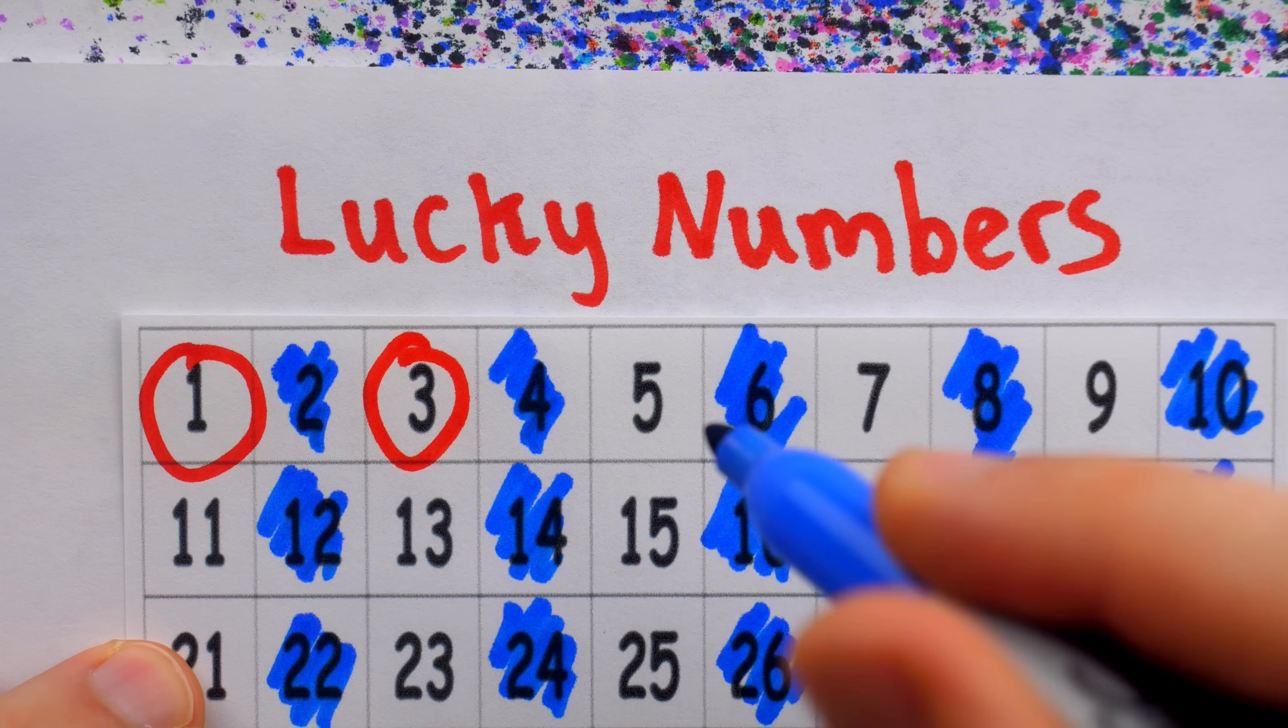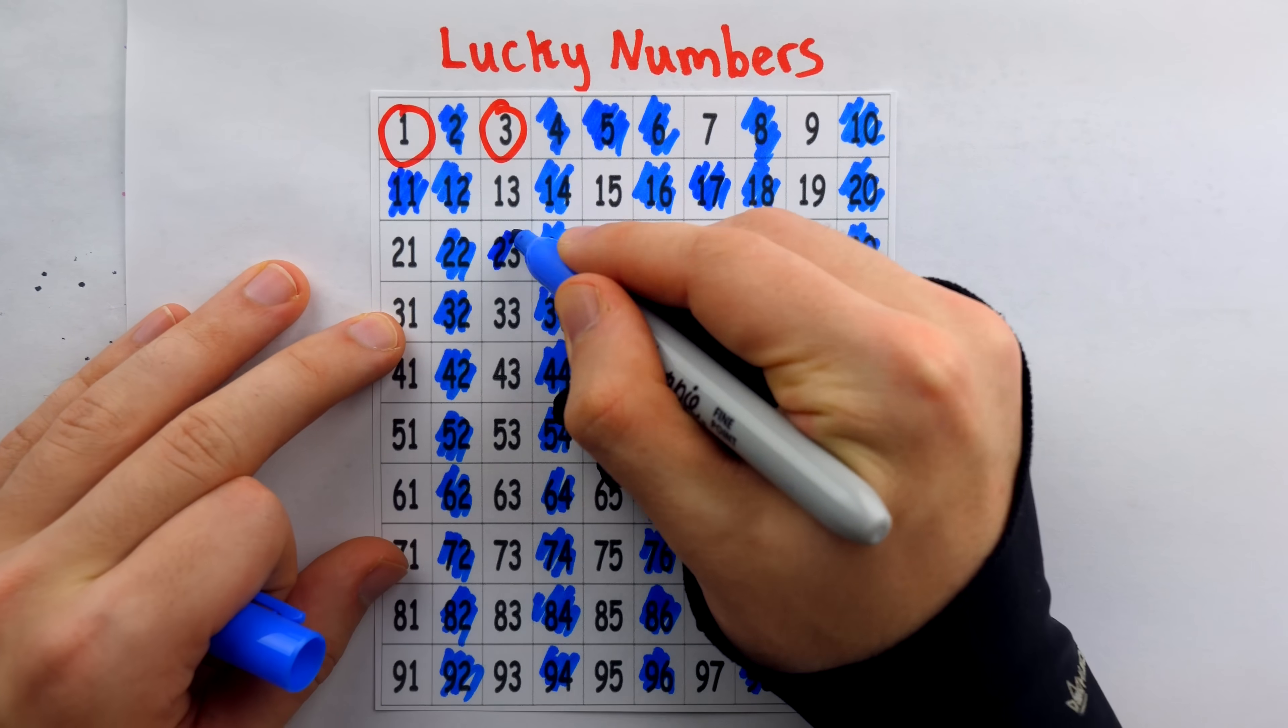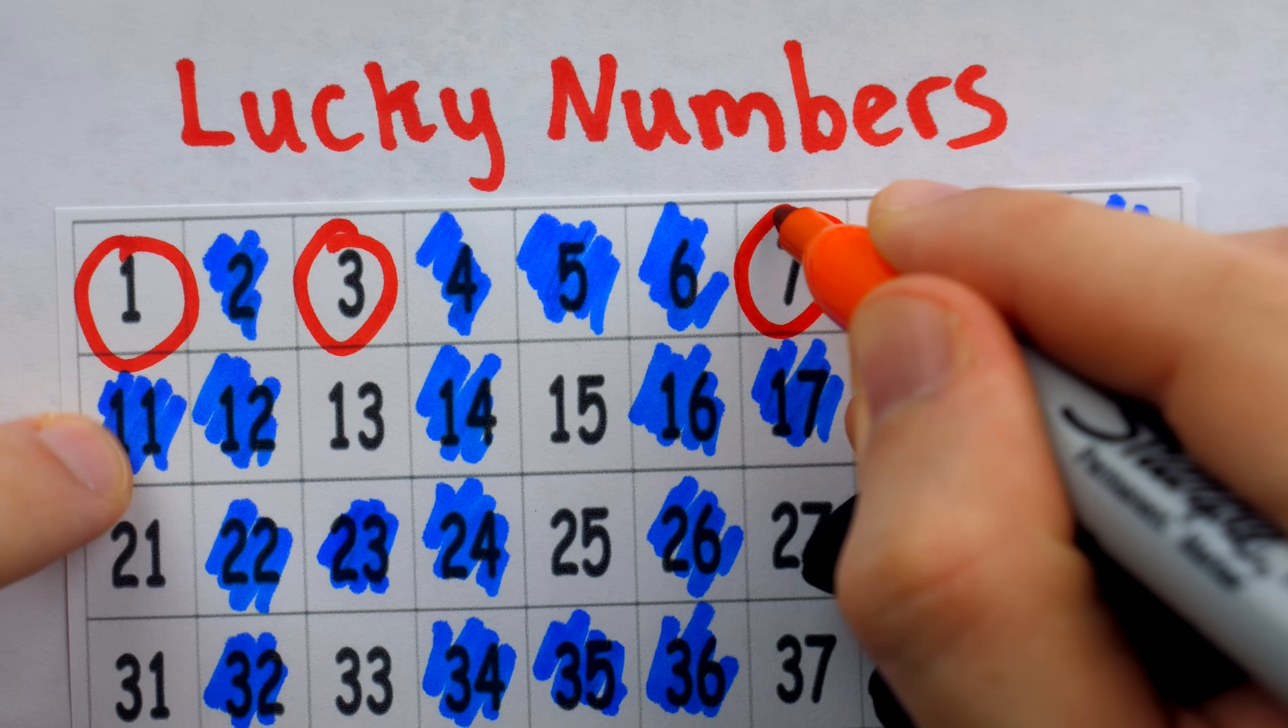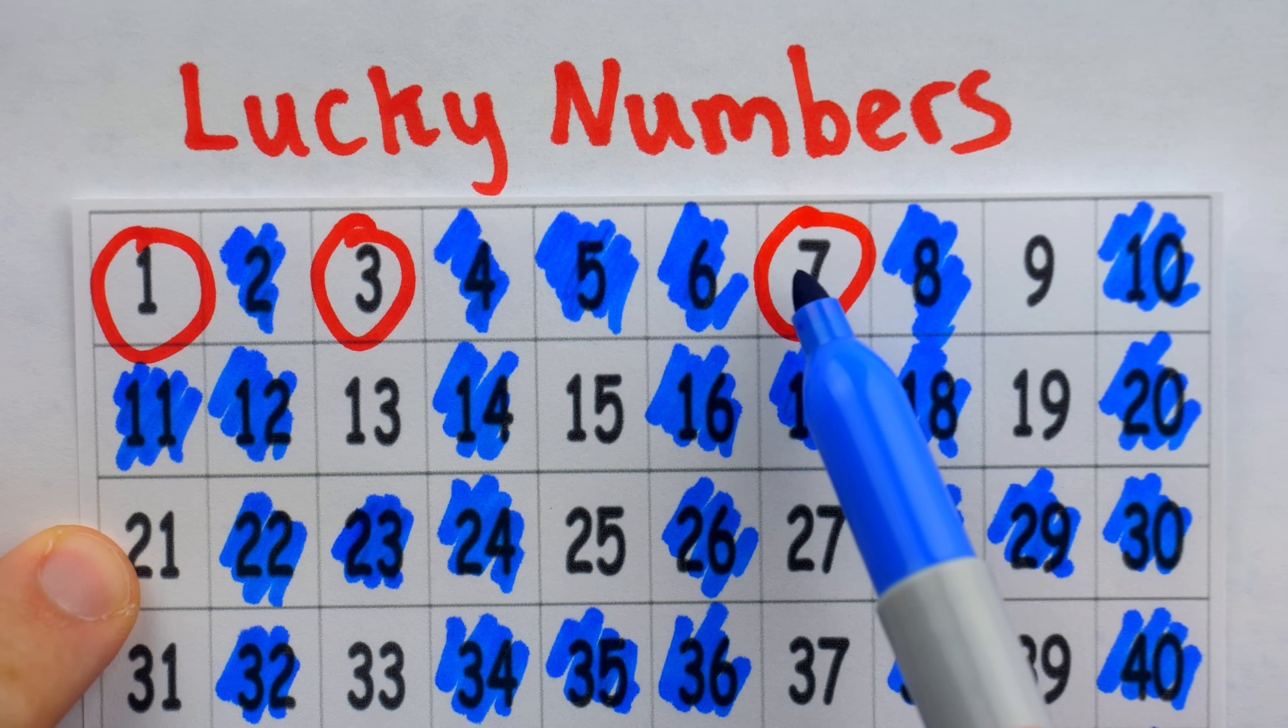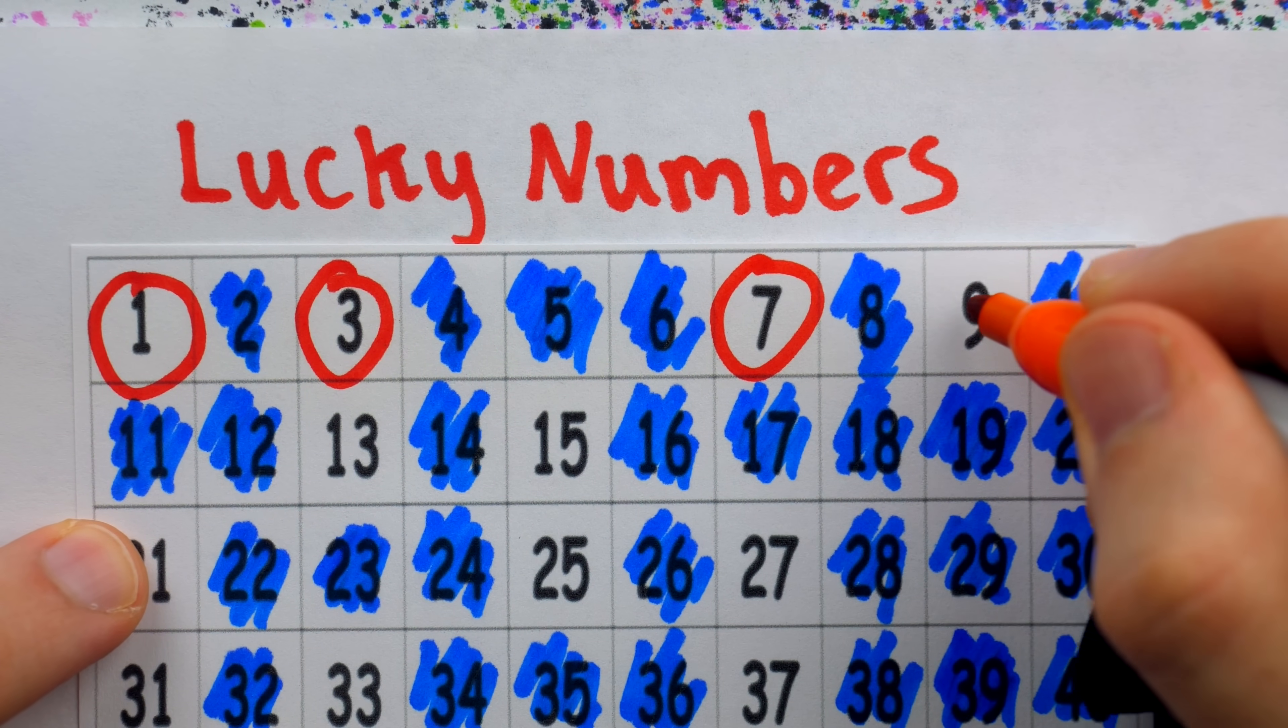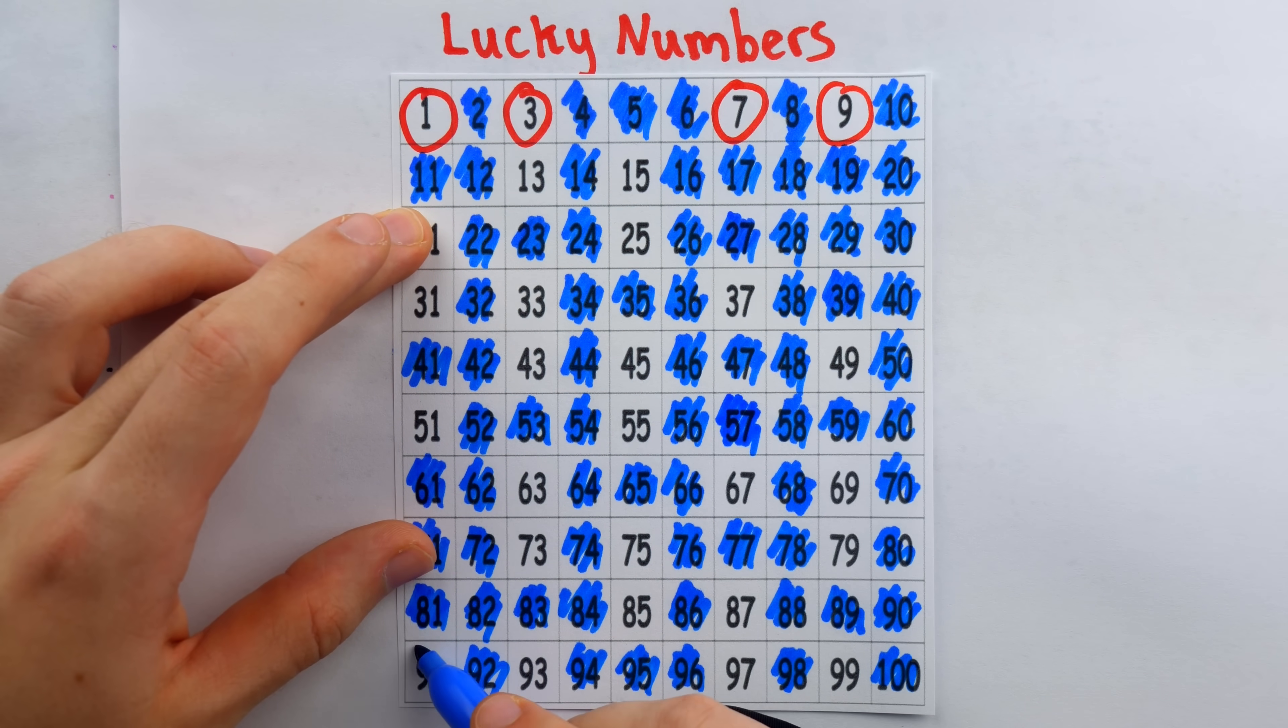The next surviving number, and hence the next lucky number, is three. Then beginning at one, we eliminate every third surviving number. So count one, two, three, five gets eliminated. One, two, three, 11 gets eliminated. The next surviving number, and hence the next lucky number, is 7. Again, beginning at 1, we'll eliminate every 7th surviving number. So count 1, 2, 3, 4, 5, 6, 7, 19 is eliminated. The next lucky number then is 9, so we'll eliminate every 9th surviving number, again beginning at 1. So that means 27 gets eliminated, 57 gets eliminated, and 91 gets eliminated.